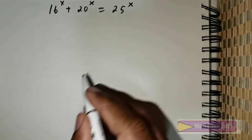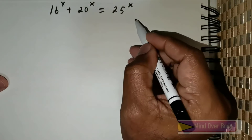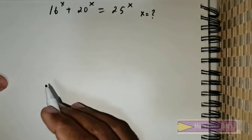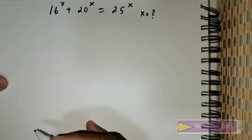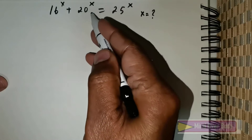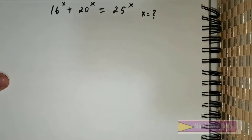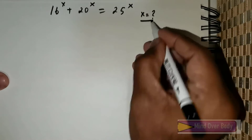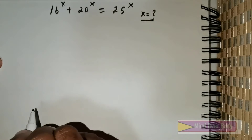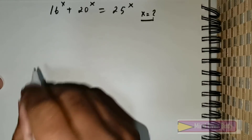Students, in today's class we will learn how to solve this question. We are expected to find the value of x. When you look at this question it might be quite intimidating when you see 16 raised to the power x plus 20 raised to the power x is equal to 25 raised to the power x. In actual reality, a simple simplification process can reduce this entire system to a solvable algebraic equation.